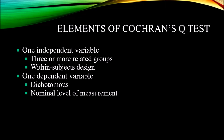Now let's look at the elements of a Cochrane's Q-Test. You have one independent variable with three or more related groups — referred to as K related groups. This is a within-subjects design, so the same participant is being measured three or more times. You have one dependent variable, and again it is dichotomous, which is a special case of the nominal level of measurement that only allows two mutually exclusive responses — for example, yes or no, or zero or one.